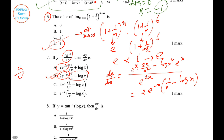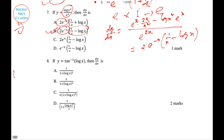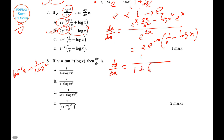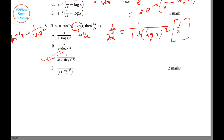Question 8: y equals tan inverse x. The derivative of tan inverse x is 1/(1 + x²). Applying the chain rule, dy/dx equals 1/(1 + (log x)²) multiplied by tan inverse x itself, and the derivative of log x is 1/x. So we multiply by 1/x. Option C is the correct answer.